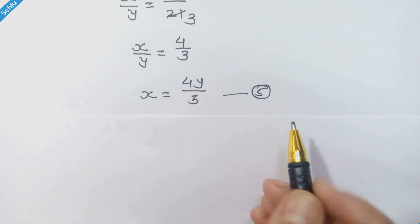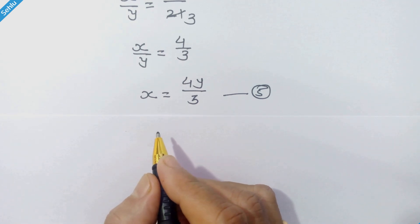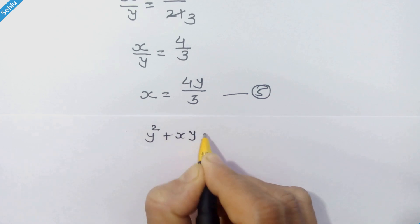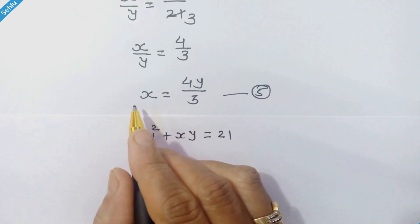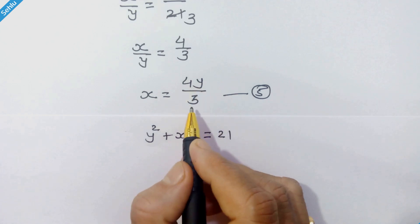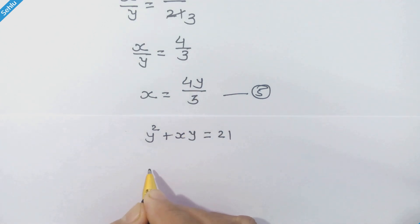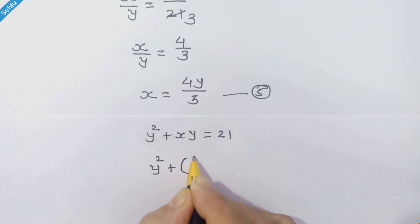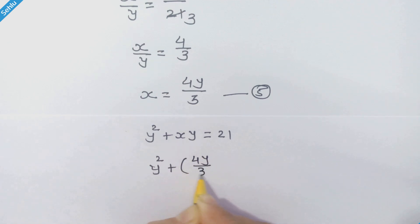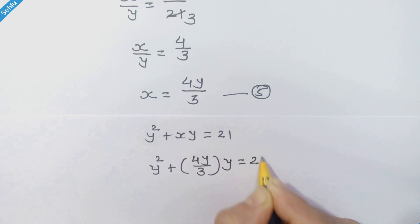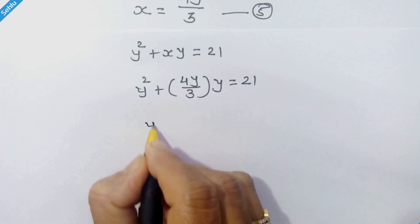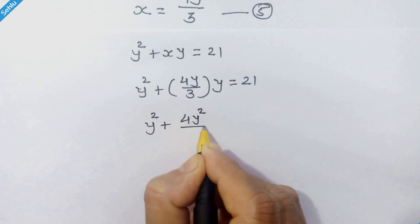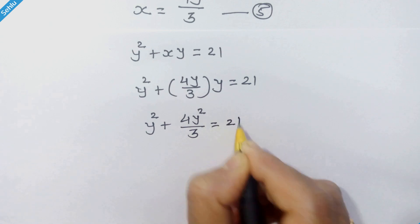Now we will put this value of x into equation 2, which is y squared plus xy is equal to 21. Putting x equal to 4y upon 3, we have y squared plus (4y upon 3) times y is equal to 21.